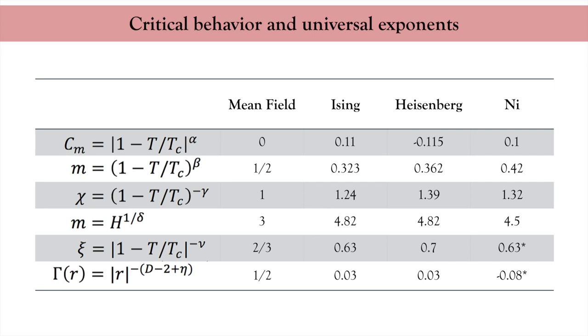As a concrete example let's consider the critical exponents of several model systems. The first column here shows the mean field theory discussed in the previous lecture. The second column shows the critical exponents for the Ising model that we also discussed at the end of the previous lecture, and the third column is the results obtained using the Heisenberg Hamiltonian. Now the last column shows the result for bulk nickel. What is striking is that you see directly that nickel does not belong to the universality class defined by the mean field theory. It is actually closer to the Heisenberg model than to the mean field theory.